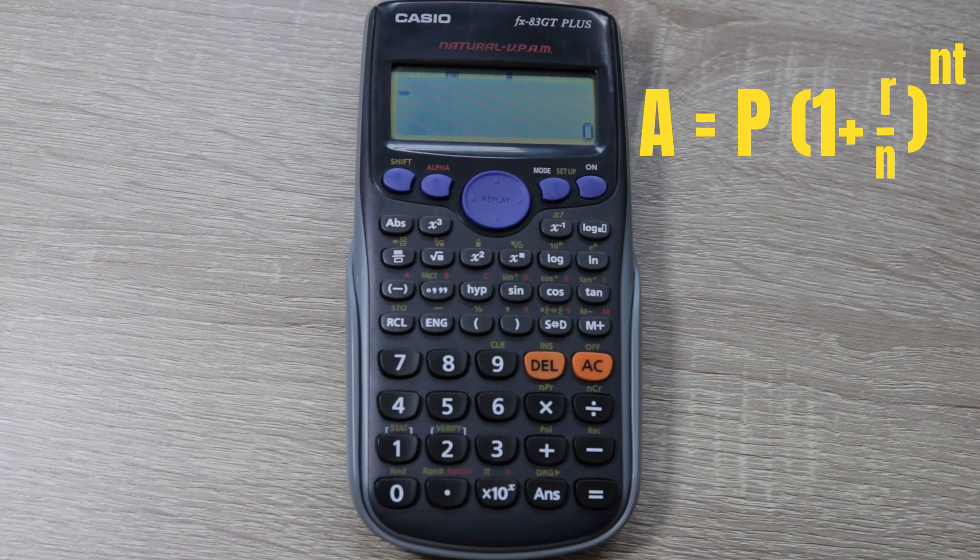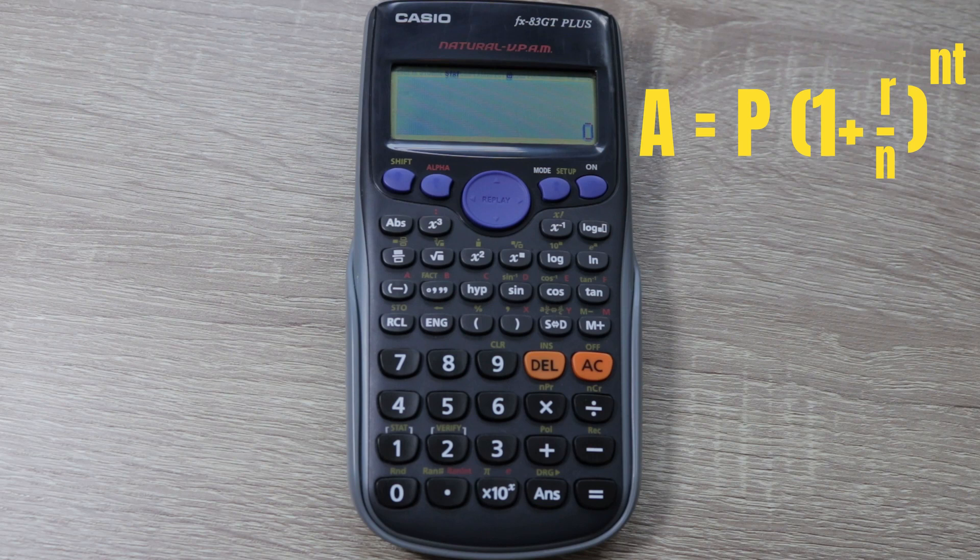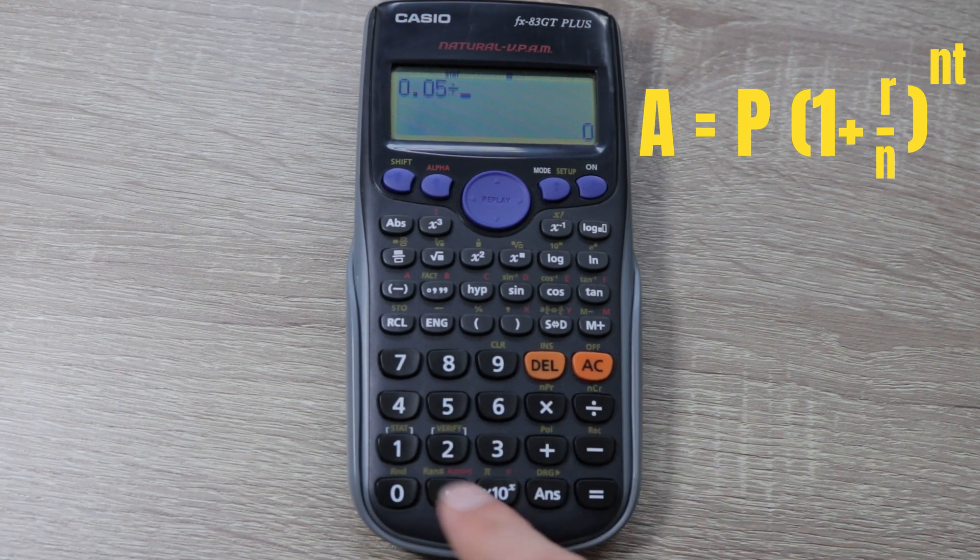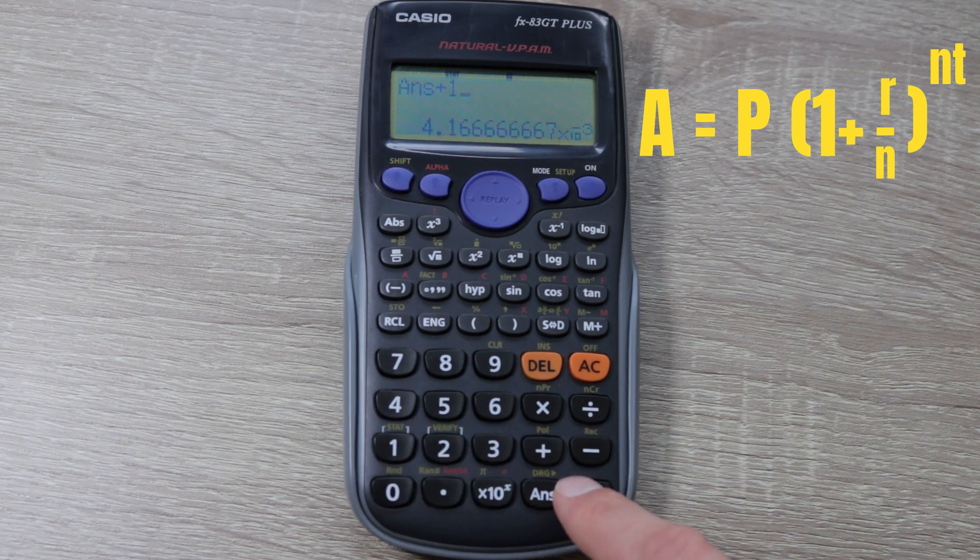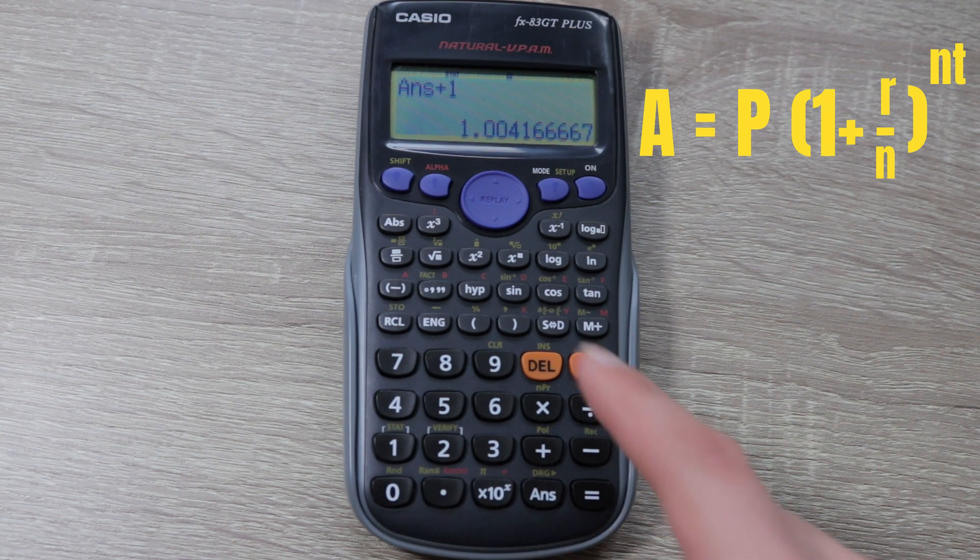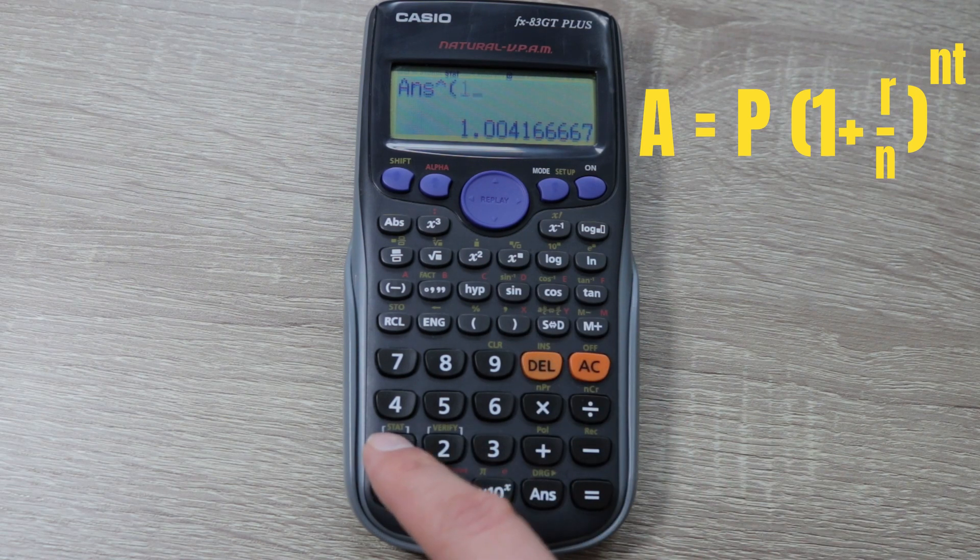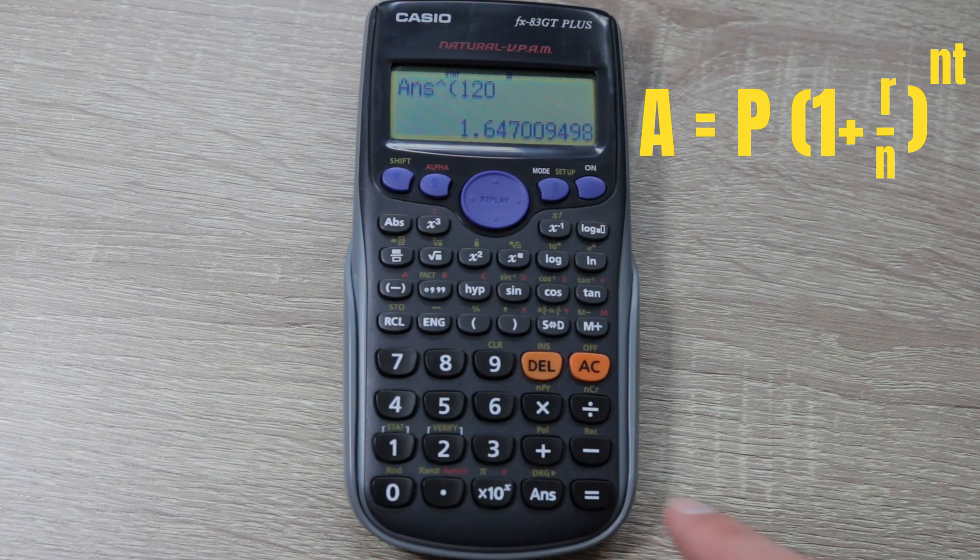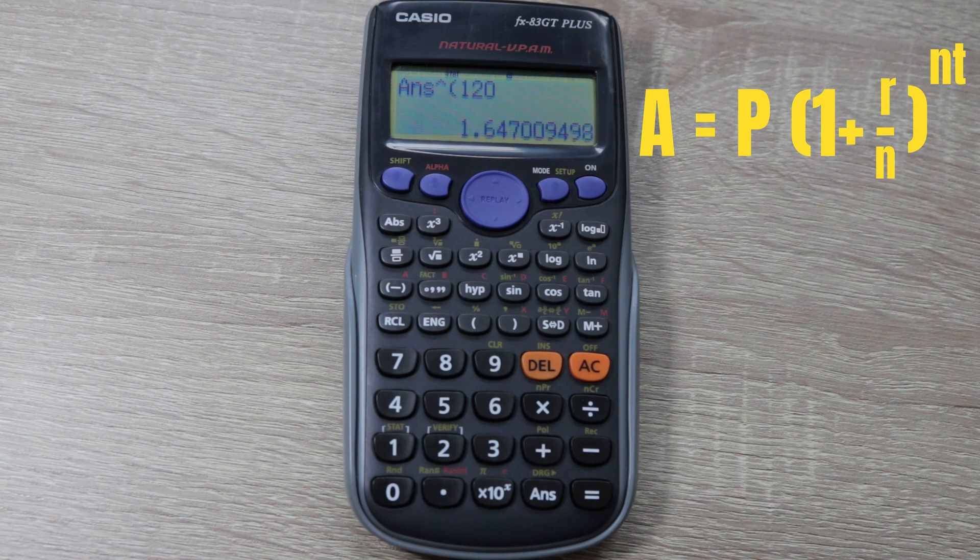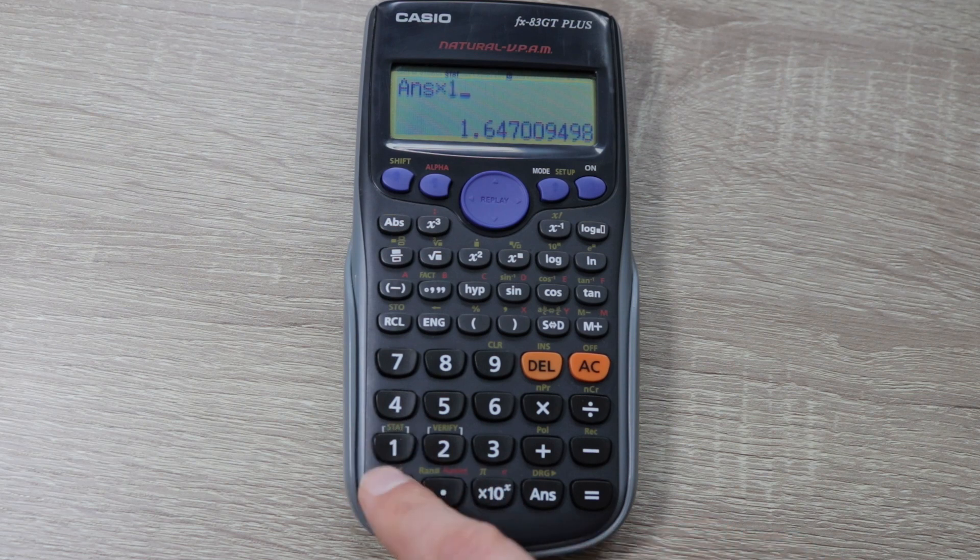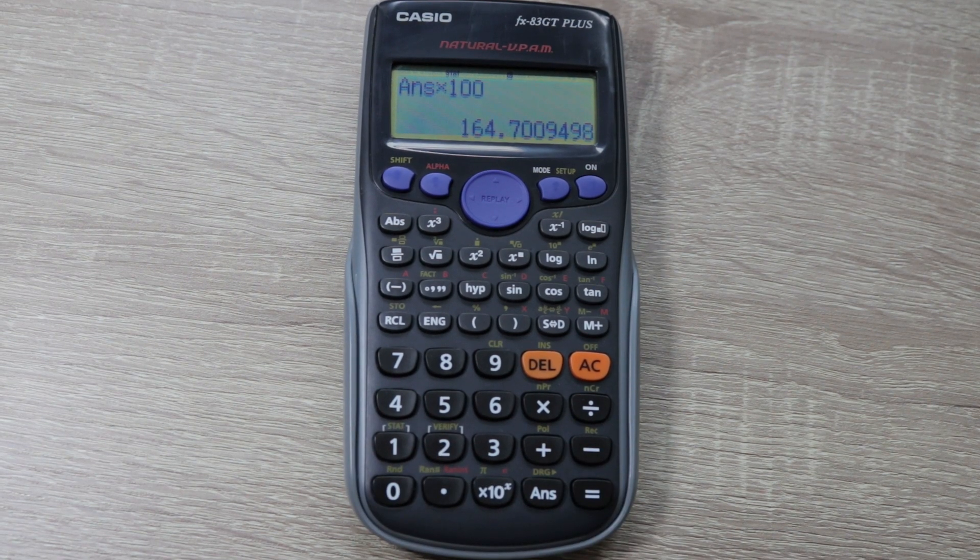We'll then calculate what's in the brackets. That will be 0.05 divided by 12, then we'll plus the 1, and to the power of 120 is 1.647. We can then times that by our original sum and we'll get £164.70.